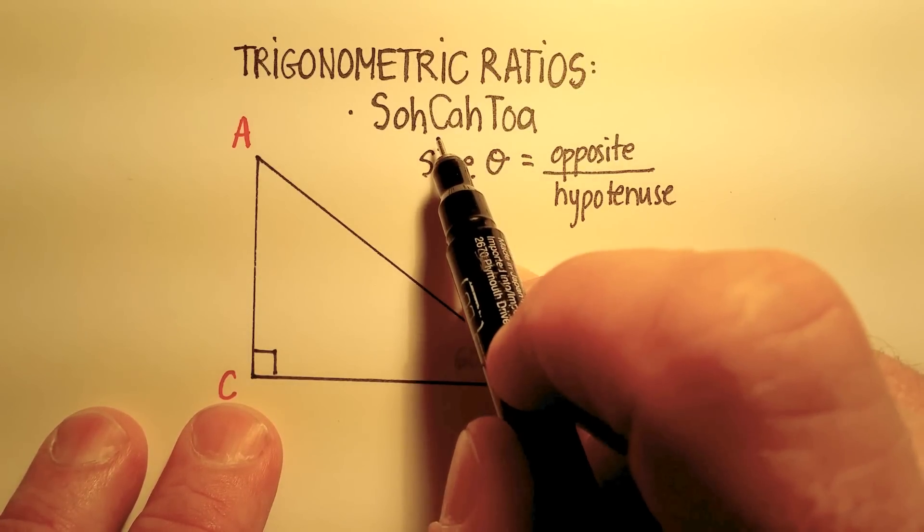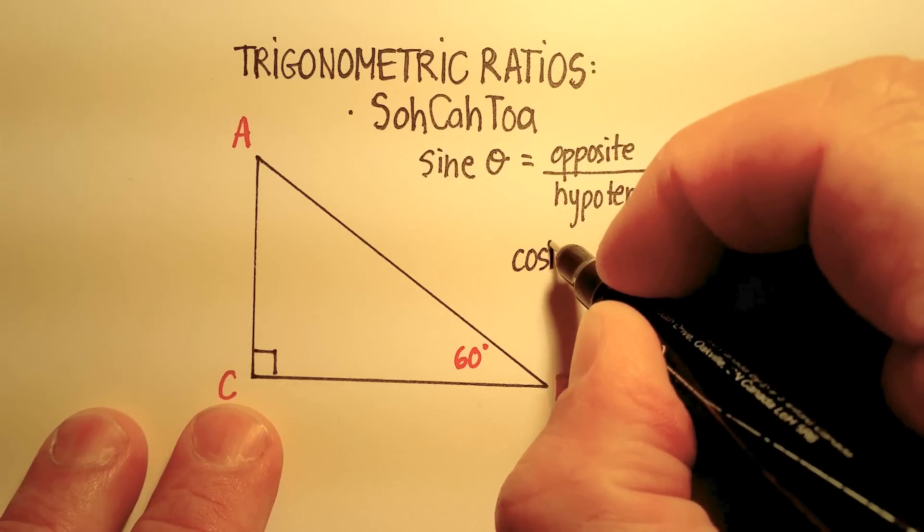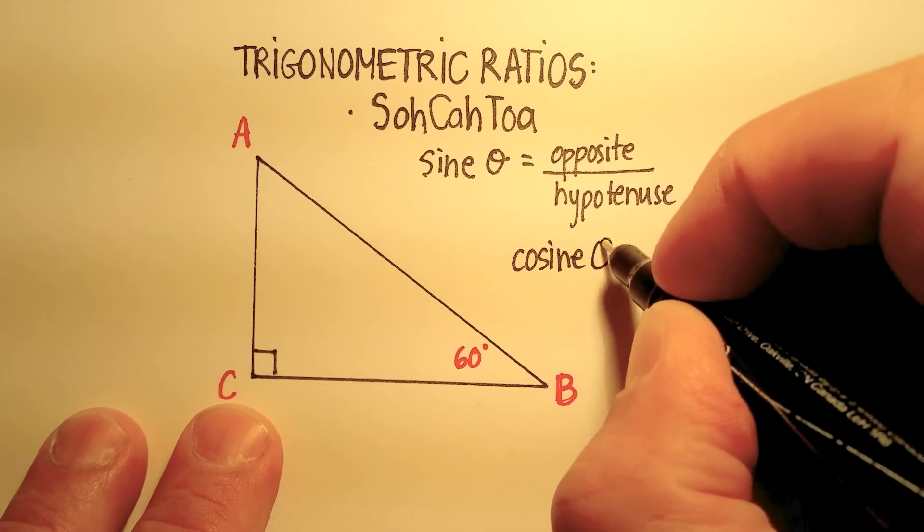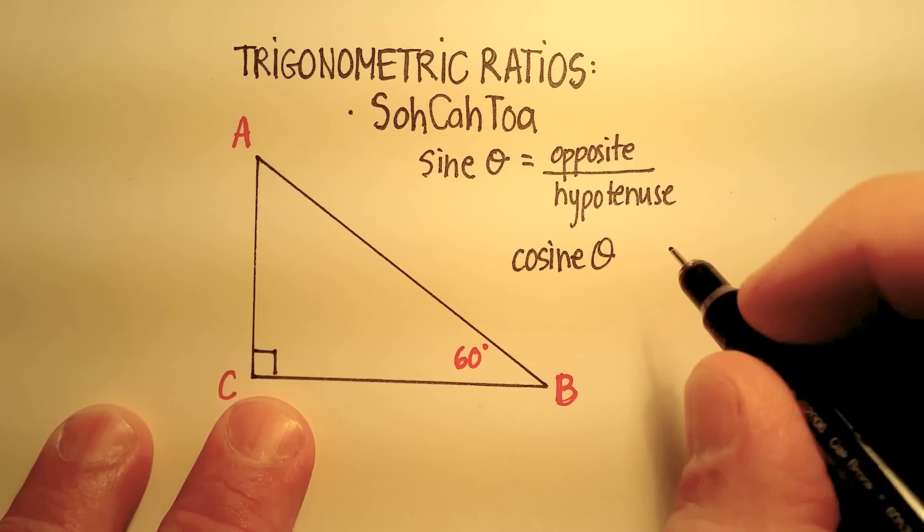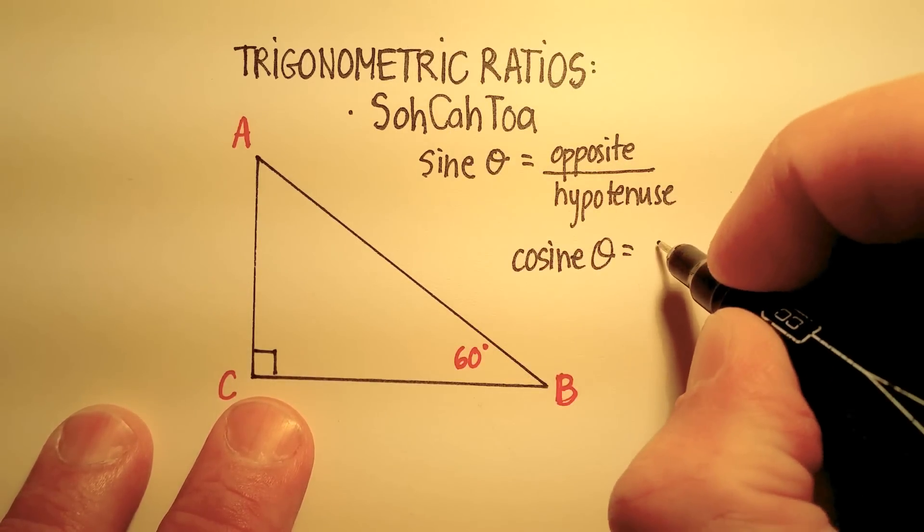Now there's something called the cosine as well. And again, we'll just say the cosine of any angle would be equal to, according to this, the adjacent side over the hypotenuse.